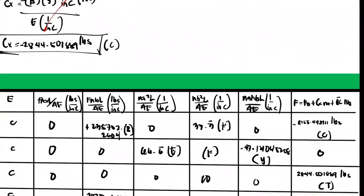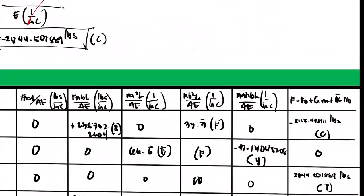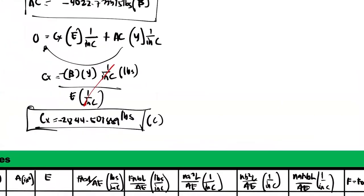To get the forces in all the members, you have formula F equals F sub 0 plus C sub X plus member AC times the NB. Okay.